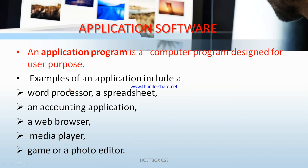Application software is a computer program designed for user purposes only. Examples include a word processor or spreadsheet for accounting, a web browser, media player, game, or photo editor. These are all examples of application software.